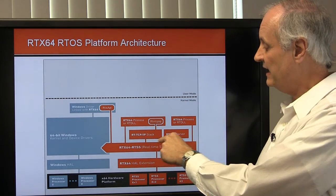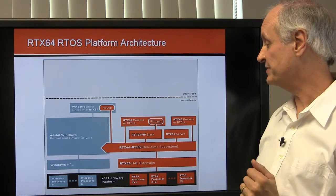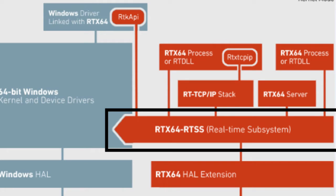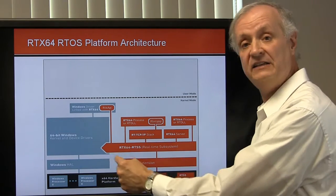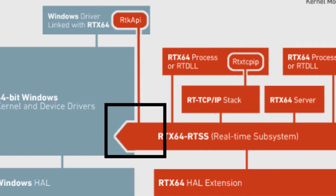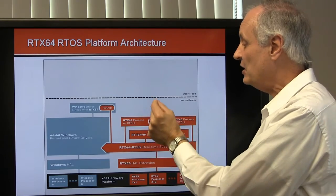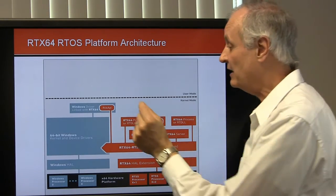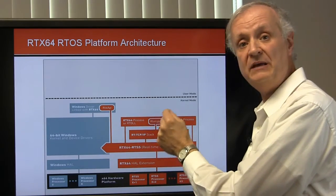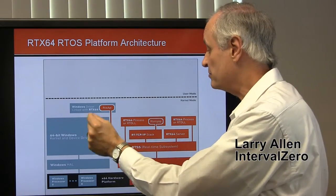Next, look at the RTSS, or real-time subsystem. The real-time subsystem is where you will spend most of your time and where all the hard real-time performance is achieved. An important detail to note is that any Windows application that is running may be preempted by any ready-to-run RTX process. That means RTX can never be preempted or blocked by a Windows process.